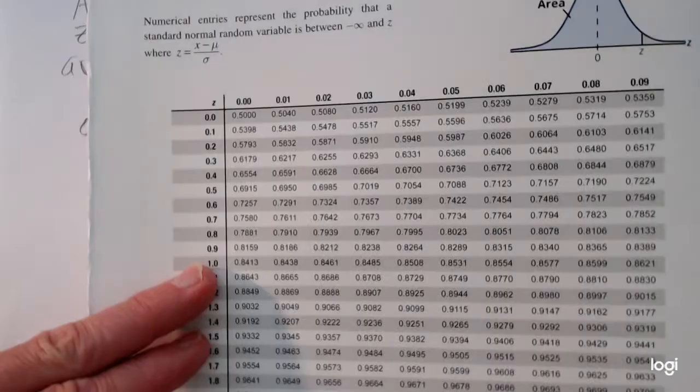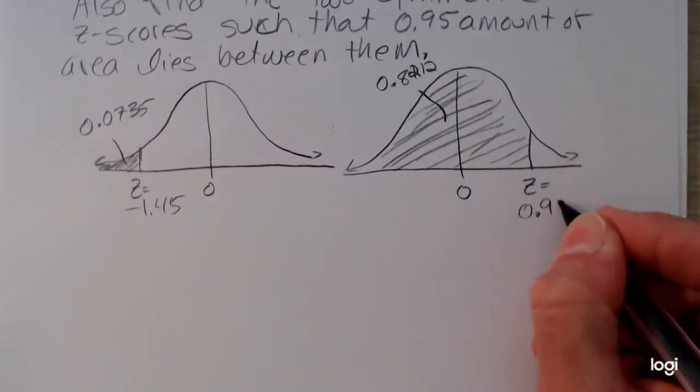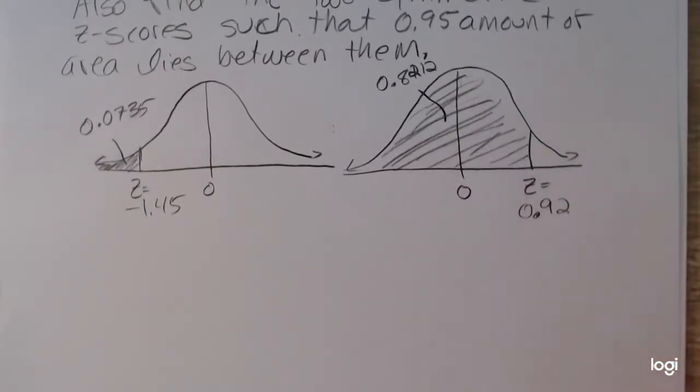So I drew it a little further to the right than I should have, but sketching it is a visual aid. It just tells me, am I above 0? Am I below 0? Am I far away from 0? Am I close to 0?